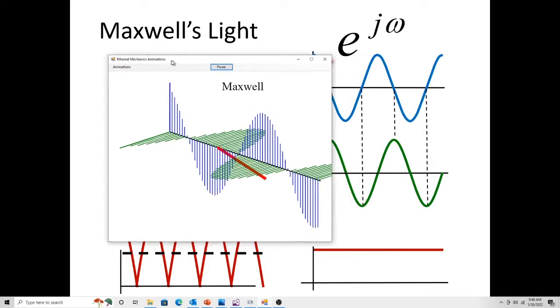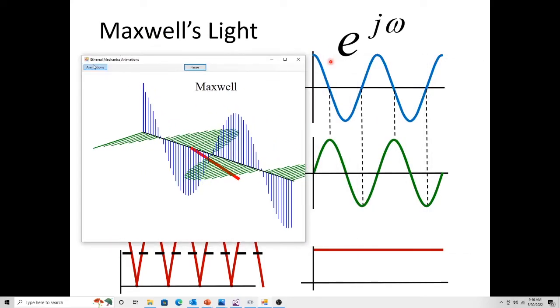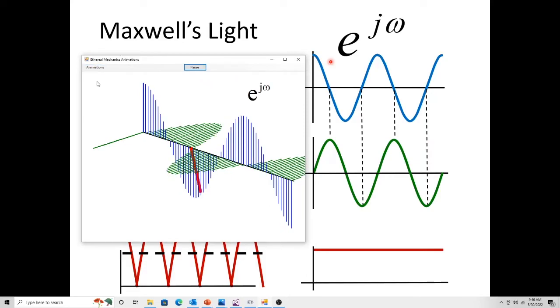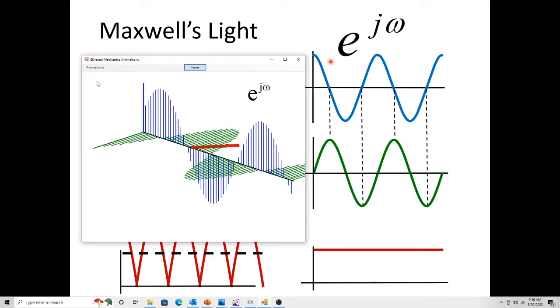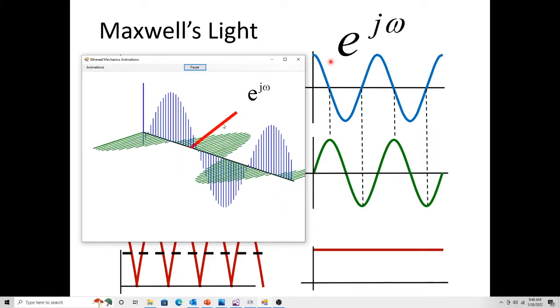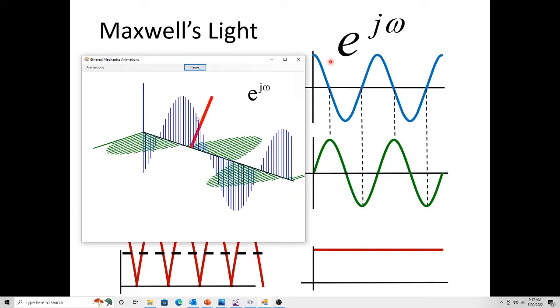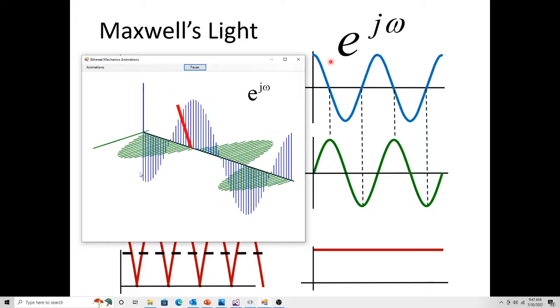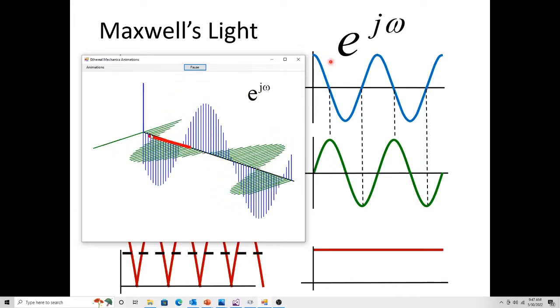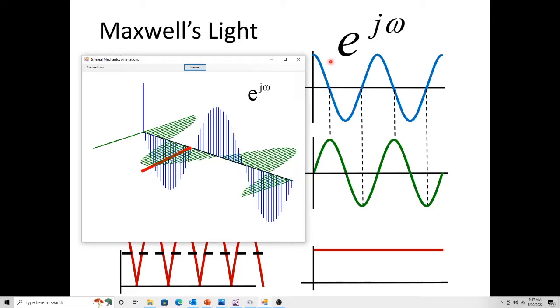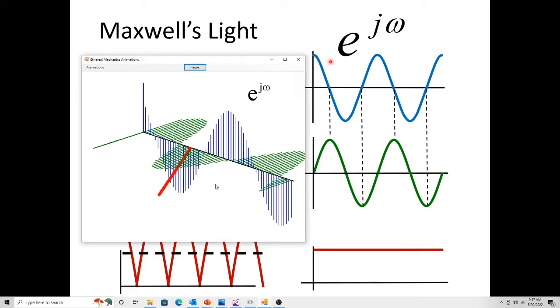Let me show you what real people that do real work in engineering use. They use what's called Euler's equation, also known as e to the j omega. Now you notice the spin. The spin that the quantum mechanics talk about that their photons should have spin. Now we see spin. And guess what? The magnitude of the energy in the wave is constant.